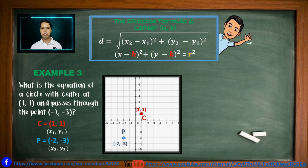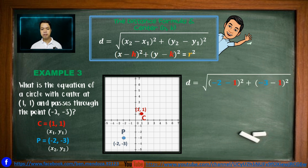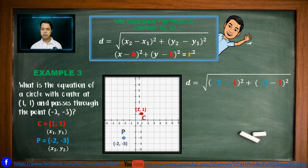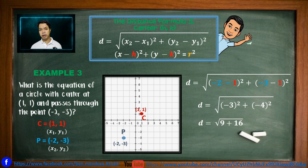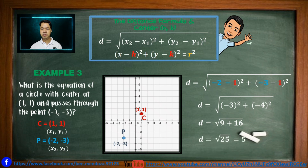To get the distance between these two points, we apply the distance formula: D equals the square root of (negative 2 minus 1) squared plus (negative 3 minus 1) squared. Negative 2 minus 1 gives us negative 3, so that is negative 3 squared, plus negative 3 minus 1 gives us negative 4, so we have negative 4 squared. Negative 3 squared equals 9 and negative 4 squared equals 16. Getting the sum gives us the square root of 25, and the square root of 25 is equal to 5 units.